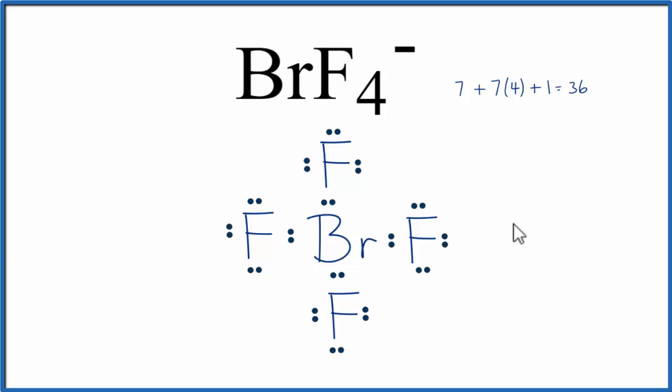We're going to need to put those remaining 4 valence electrons on the central Bromine. When we do that, the Bromine has more than 8 valence electrons, but Bromine can have an expanded octet, so that's okay.